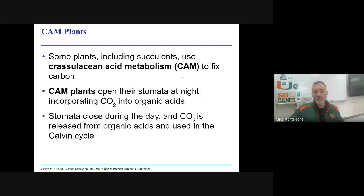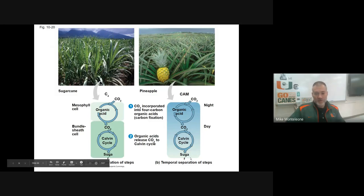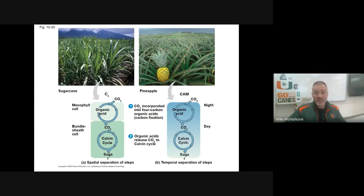Crassulacean acid metabolism — we call them CAM plants. Instead of the location of the Calvin cycle being different, what CAM plants do is close their stomata during the day — they're not going to lose water vapor — and open the stomata at night when it's cooler and they won't lose as much water. At night, CO2 is brought in and fixed into organic acids, and then during the day those acids release the CO2 and offer it up for the Calvin cycle to make sugar. In C4 photosynthesis the location of the Calvin cycle is different; in CAM plants it's a timing thing — stomata are closed during the day, open at night, CO2 is trapped at night and given up during the day when sunlight energy is available to make ATP and NADPH.